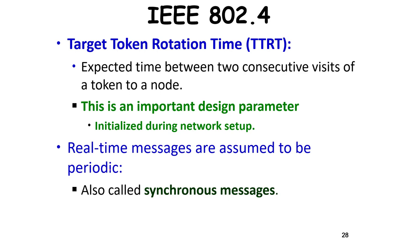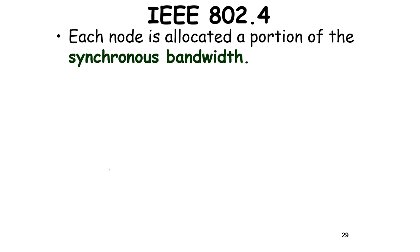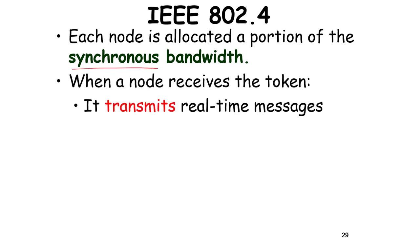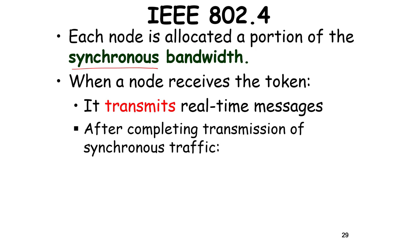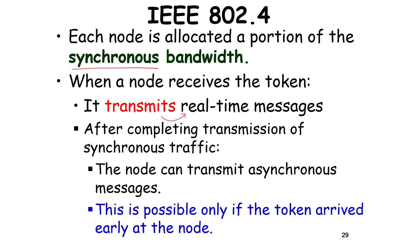In 802.4, periodic messages are called synchronous messages, and non-periodic, aperiodic, or sporadic messages are called asynchronous messages. For periodic CBR-like messages, a portion of the synchronous bandwidth is allocated to each node. When a node receives the token, it transmits its real-time synchronous messages. After completing synchronous traffic, if the node still has time available — meaning the token arrived early — it can also send asynchronous messages.